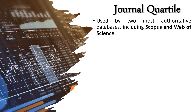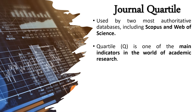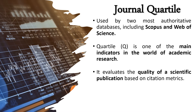Journal quartiles are used by the two most authoritative databases: Scopus and Web of Science. Quartile ranking is one of the main indicators in the world of academic research for specific journals. It evaluates the quality of scientific publications based on citation metrics, because in both Scopus and Web of Science the quality and classification of a journal is decided mainly by citations.